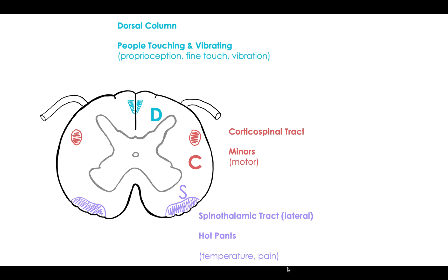So DCS, you call when people are touching and vibrating minors, hot pants. And if you remember that sentence, you can remember each one of these sections and even write out DCS on a spinal cord during the test.